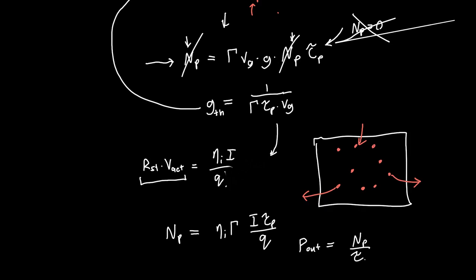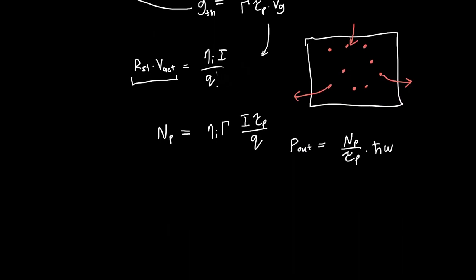To calculate the output power, we take the number of photons leaking out per unit time — given by the photon number divided by tau_p — and multiply by the photon energy h-bar times omega. Plugging in our expression for the number of photons, we get a final expression for the output power: P_out equals eta_i times gamma — both unitless efficiency factors — times h-bar omega over q, times the current I.